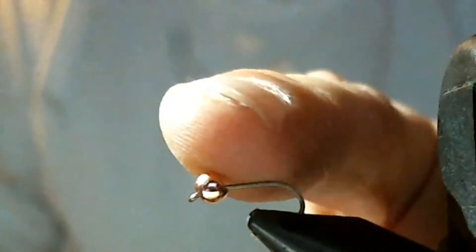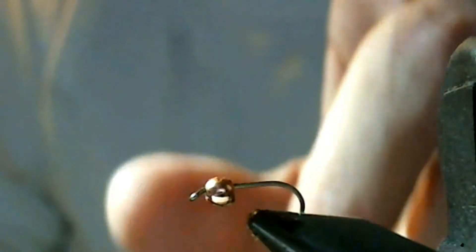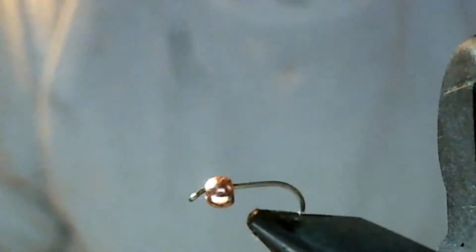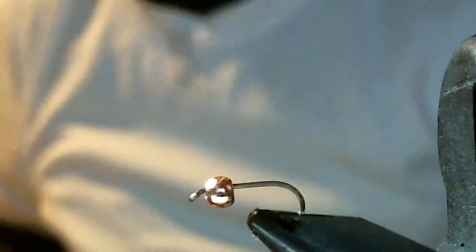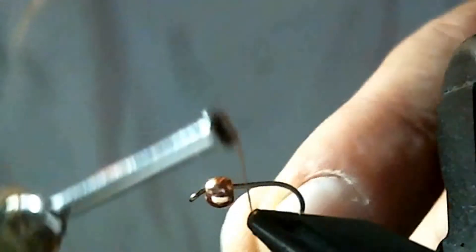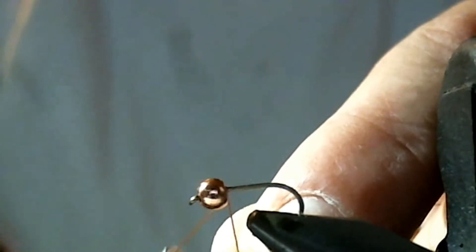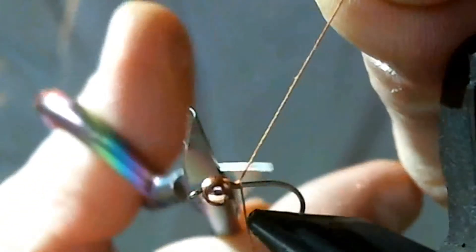Okay, we start. I already have the bead head in the hook to start the fly, and this is going to be the Waltz Worm regular worm. So we start with a brown thread, and tie that in.